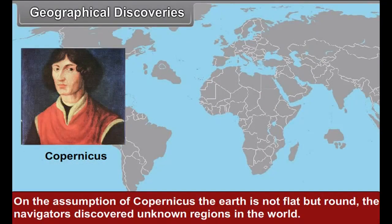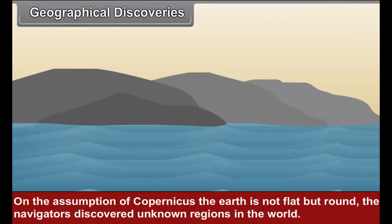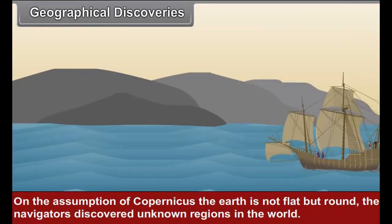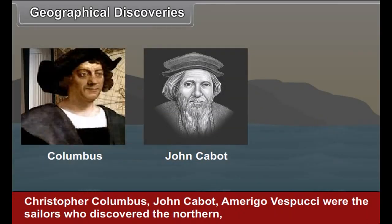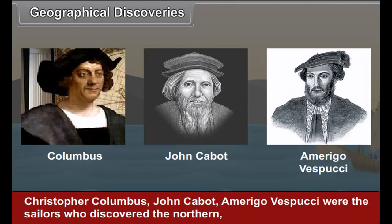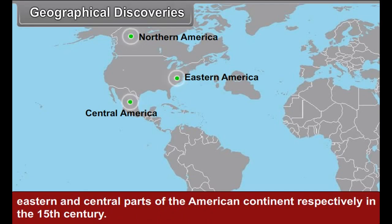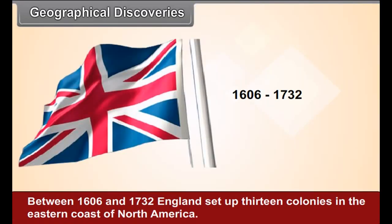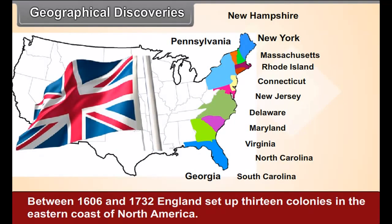On the assumption of Copernicus, the earth is not flat but round. The navigators discovered unknown regions in the world. Christopher Columbus, John Cabot, and Amerigo Vespucci were the sailors who discovered the northern, eastern, and central parts of the American continent respectively in the 15th century. Between 1606 and 1732, England set up 13 colonies in the eastern coast of North America.